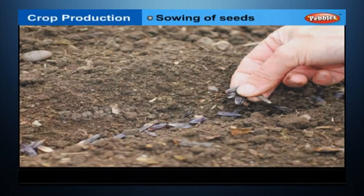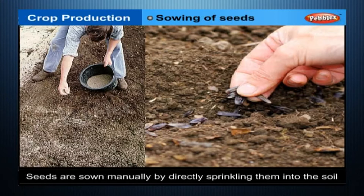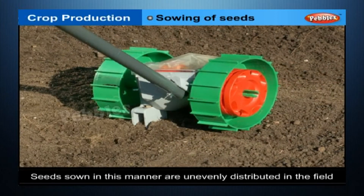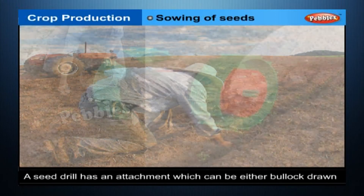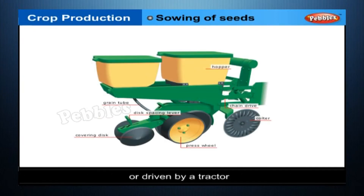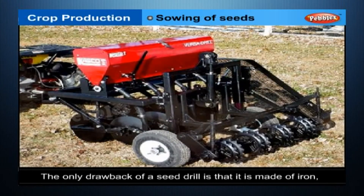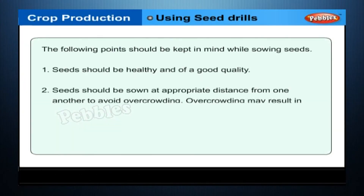Sowing of Seeds. Manual Sowing: seeds are sown manually by directly sprinkling them into the soil. This process is called broadcasting. Using Seed Drills: a seed drill has an attachment which can be either bullock-drawn or driven by a tractor. Seeds sown with a seed drill are evenly distributed. The only drawback of a seed drill is that it is made of iron, hence needs a lot of maintenance to prevent rusting. These are the steps to be followed while sowing the seeds.